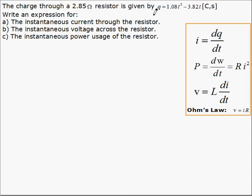In this example, we're given charge as a function of time and a resistor of known resistance. We're asked to find the current through the resistor, the voltage across the resistor, and the power usage of the resistor, all as functions of time.